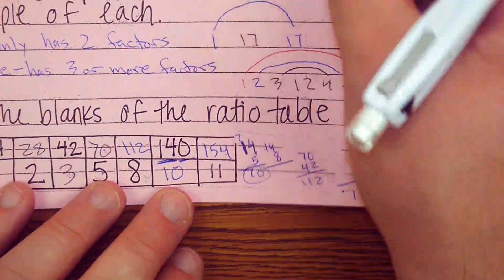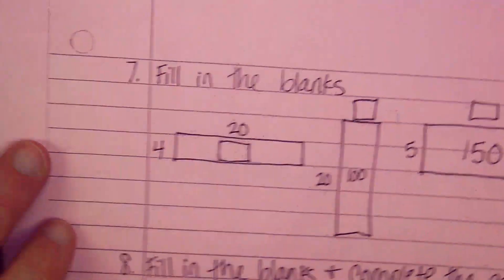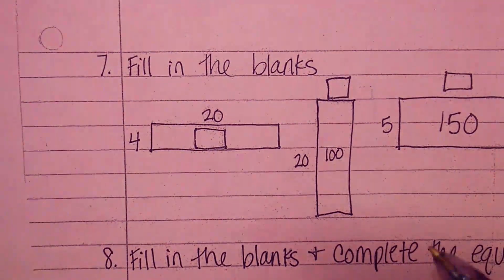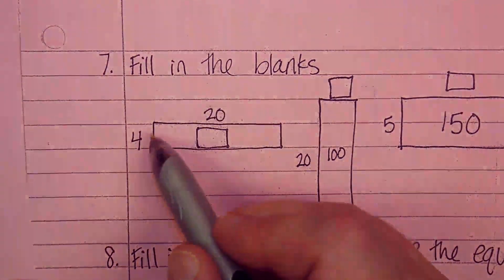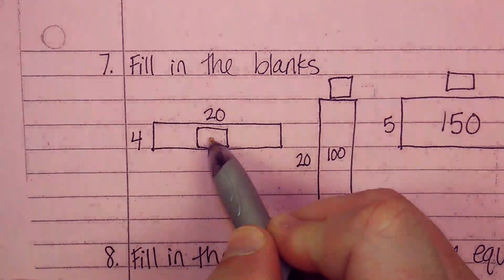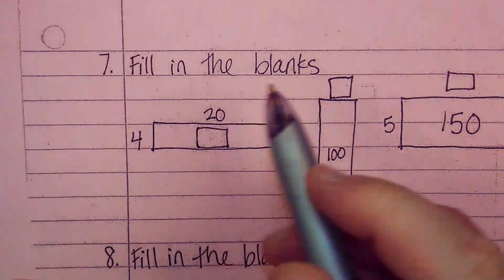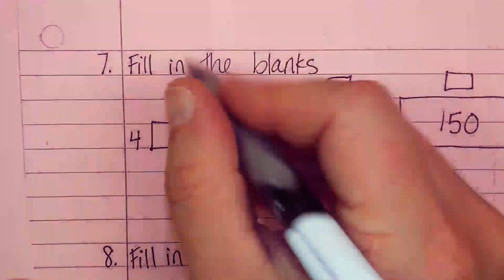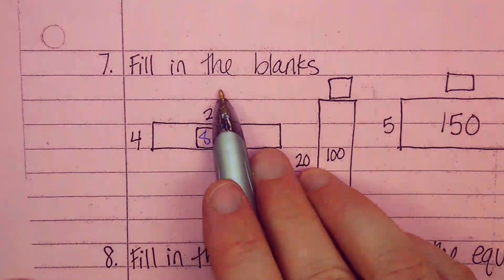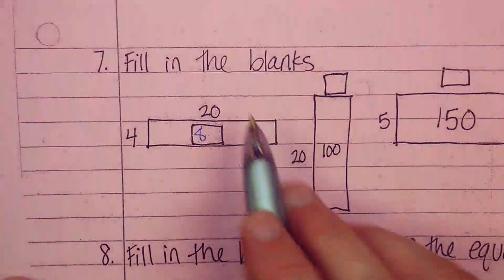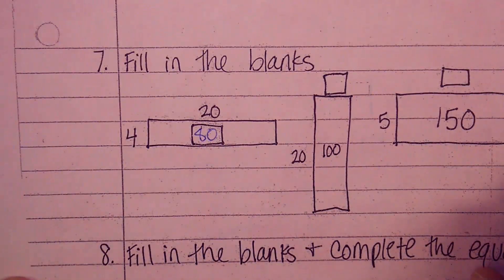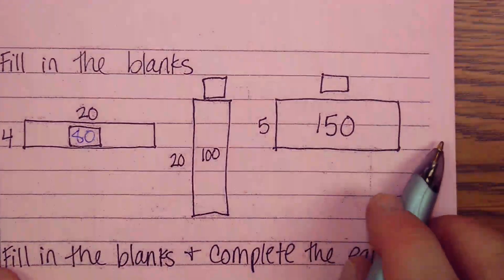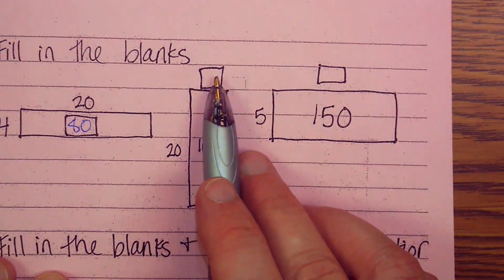Like I said, you're allowed to pause this video any time you would like to take a breather. Now, here we go. 20 times 4 is the area of this rectangle. So the area is what? Well, make it a little easier. Get rid of that 0. 4 times 2 is 8. Got rid of the 0, put the 0 back on. 80.